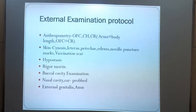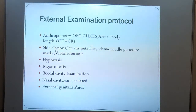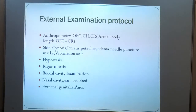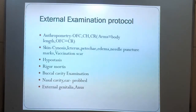This is the protocol of the external examination. First is anthropometry. Then the skin should be looked for sinuses, icterus, petechiae, edema, needle puncture marks and vaccination scars. Rigor mortis should be assessed. Buccal cavity, nasal cavity, and external genitalia should be examined.